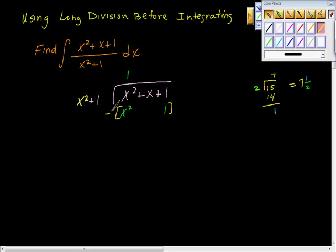So here's my subtraction. I'm going to take this negative sign and distribute it through, so that's negative, and this is negative. And I think we can agree that when we subtract these, 1 minus 1 is 0, x minus 0 is x, x squared minus x squared is 0.